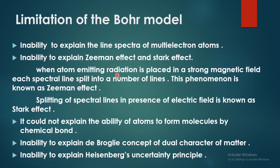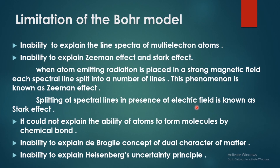When an atom emitting radiation is placed in a strong magnetic field, each spectral line splits into a number of lines. This splitting of the spectral line in a magnetic field is the phenomenon called the Zeeman effect. The splitting of spectral lines in an electric field is called the Stark effect.